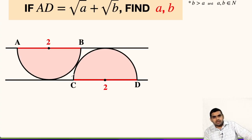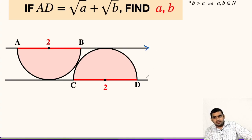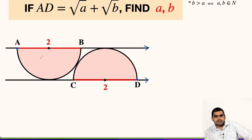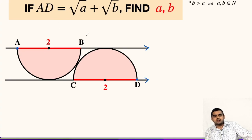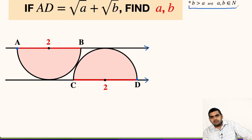Here in the figure, two identical semicircles are given whose diameters are two units each. We have two lines that are parallel to each other. This point is A and this point is D. If we connect them, then its measure is given as root A plus root B. We have to find the value of A and B. We are given that B is greater than A and they belong to natural numbers.